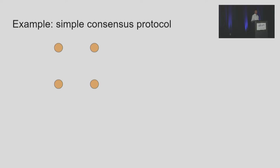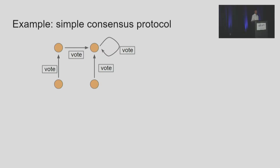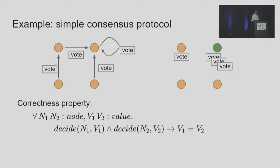Consider a simple consensus protocol where a collection of nodes try to decide on a single value. Each node can vote for itself or another node to be the leader. Once a node receives a majority or a quorum of votes, it becomes the leader and can decide on a value, which everyone else will follow. Our desired property of such a consensus protocol is that for every two nodes and for any two values, if node 1 decides on value 1 and node 2 decides on value 2, then the two values must be the same. In other words, the system cannot decide on two distinct values.